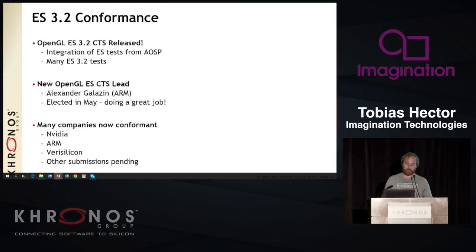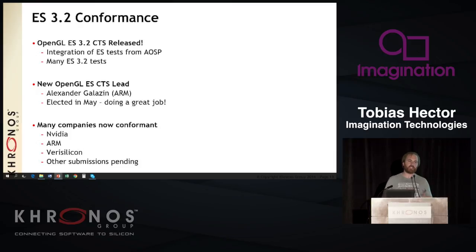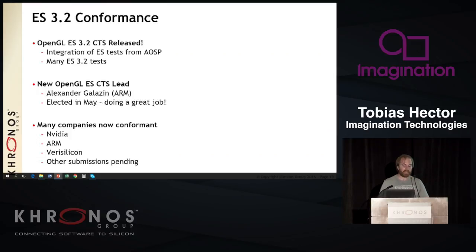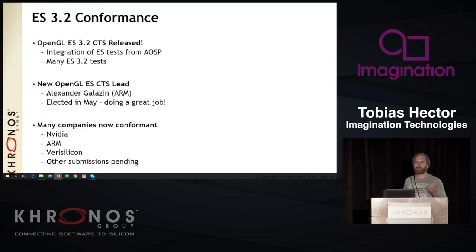With conformance, we've released the 3.2 conformance suite since last year, mostly from integrating a lot of ES tests from the Android Open Source Project. This included a lot of OpenGL ES 3.2 tests because they were based on a number of extensions, including the Android extension pack. Part of getting that out the door was down to our new CTS lead, Alexander Galatin from Arm — let's give him a round of applause.